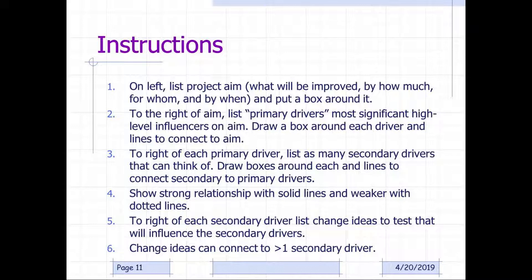So on the left, you list the project aim. What's to be improved on? By how much? By whom? And by when? And you put a box around it. To the right of the aim is the primary drivers. These are the most significant high-level influencers on the aim. You draw a box around each driver with a line to connect to the aim. To the right of that, you list as many secondary drivers as you can think of. Again, draw a box around each with lines to the primary drivers that they associate with. Show strong relationships with solid lines and weaker ones with dotted lines. To the right of each secondary driver, list ideas to test that will influence the secondary driver. Change ideas can connect to more than one secondary driver.